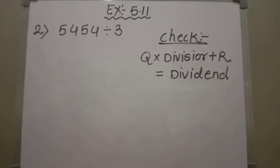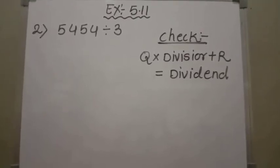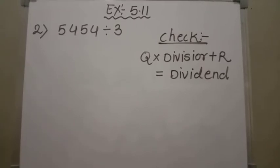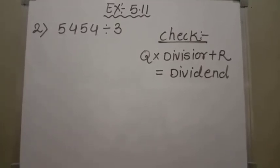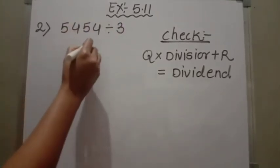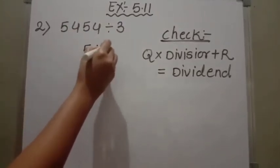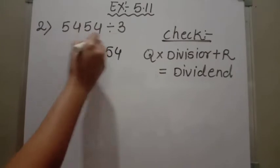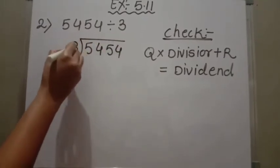Now I am going to discuss the second problem of exercise 5.11. Here we are asked to divide the 4-digit number 5454 by 3. So let us divide 5454 by 3 using the long division method.